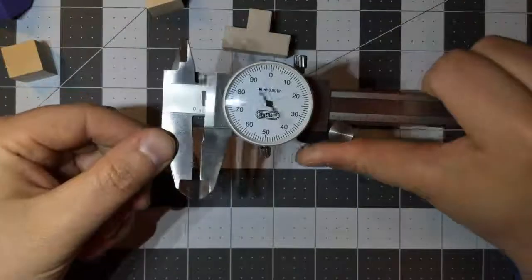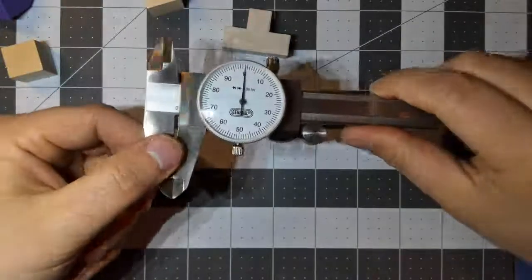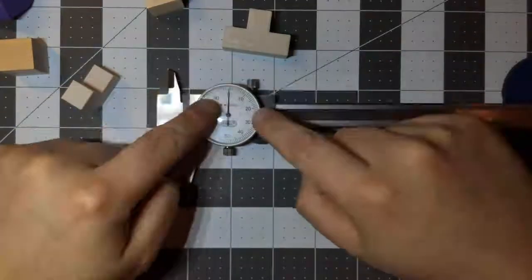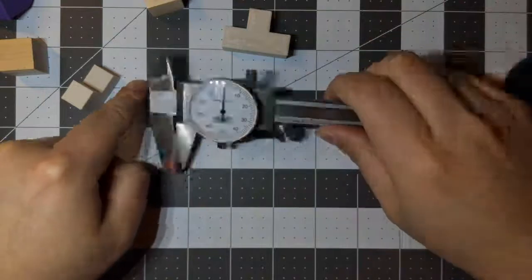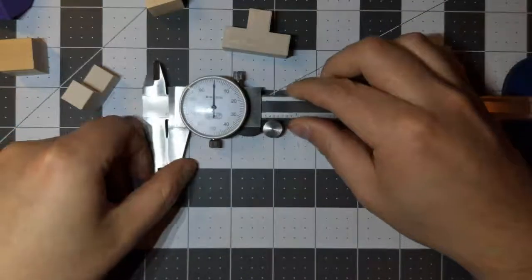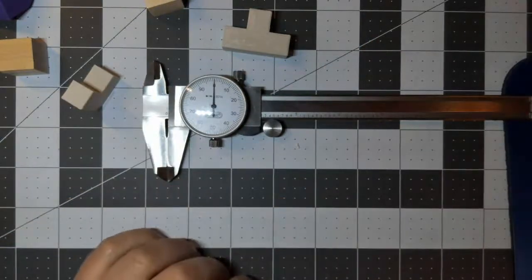So grab your Making Measurements activity packet, and an Automoblox vehicle, and a set of dial calipers. Please be careful with these. They're very sharp, they break easily, and they're not cheap. And ask me questions as you go along, don't hesitate.